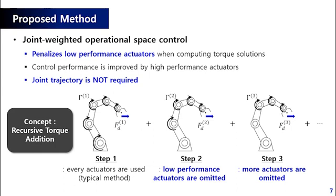If the control performance cannot reach the target level, then the controller moves on to step 3. In step 3, more actuators are omitted except high-performance ones in torque solution calculation. In this way, the sum of torque in all steps becomes the joint-weighted torque solution.